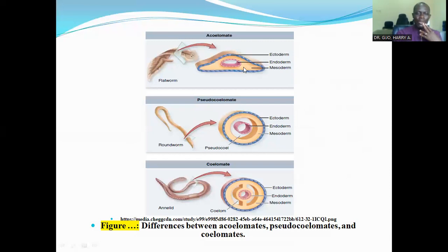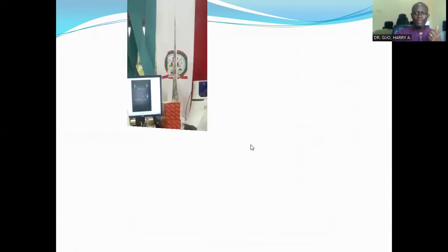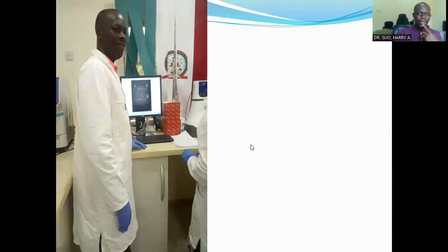Now this is a figure showing the difference between acoelomates, pseudocoelomates, and coelomates. The acoelomates do not have a body cavity — they lack body cavity. The pseudocoelomates have a false body cavity called the pseudocoelom. While the coelomates have a true body cavity — the coelom is a true body cavity.